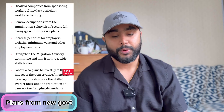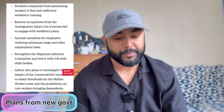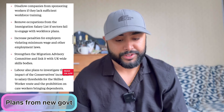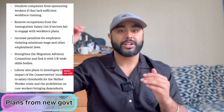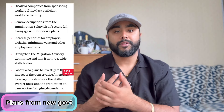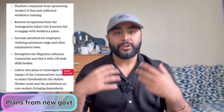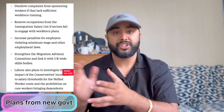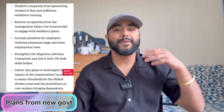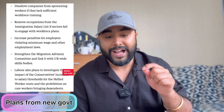The third point is about increased penalties for employers violating minimum wage and other employment laws — protecting workers from exploitation. The fourth point is to strengthen the Migration Advisory Committee and link it with UK skills bodies. Fifth, Labour also plans to investigate the impact of the Conservative government's increase of the salary threshold for the skilled worker route to £38,000. The Labour government will review whether this is actually benefiting or hurting employees in getting employment. Based on the data, there might be some relaxation — the threshold might go back to £35,000 or £34,000 — though it could also go the other way. A special team will be working on that specific case.